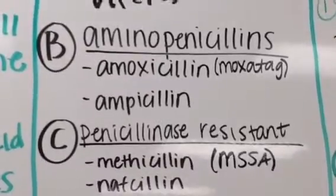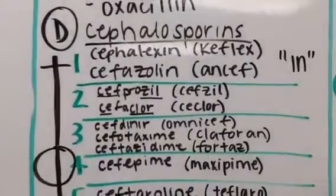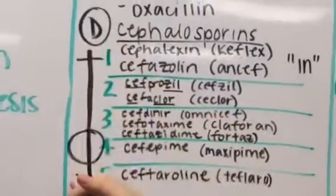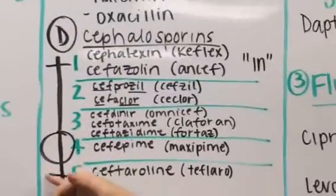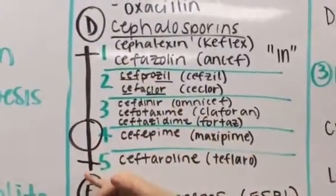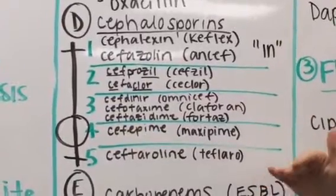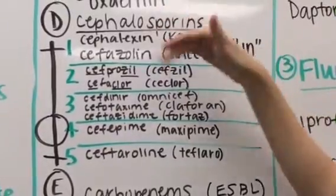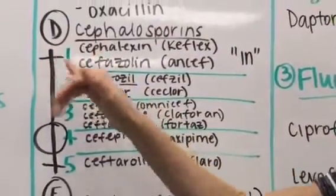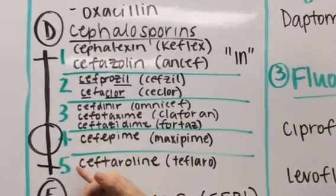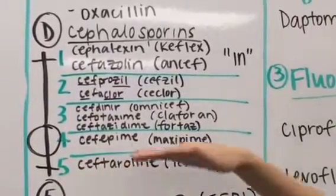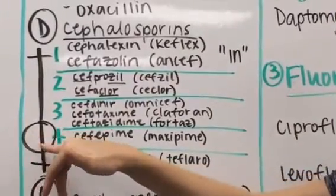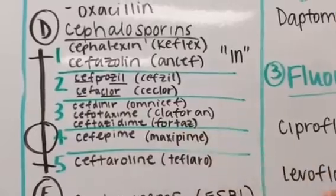Then we move into our cephalosporins, and there are five different generations. I like to draw out a little picture — it can be thought of as plus, minus, plus — representing the spectrum of gram coverage. The first generation has a lot of gram positive coverage, and the fifth generation does as well. There's varying coverage in the middle, but the highest peak of gram negative coverage is generation four.